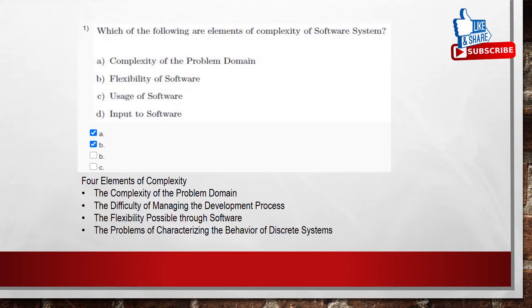As we know that there are four elements of complexity. They are the complexity of the problem domain, the difficulty of managing the development process, the flexibility possible through software, and the problems of characterizing the behavior of discrete systems. Options A and B are the correct options.